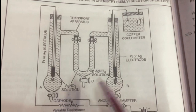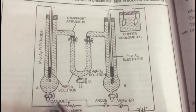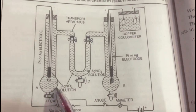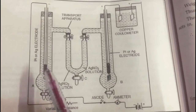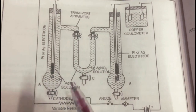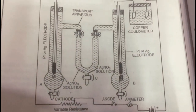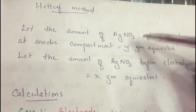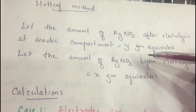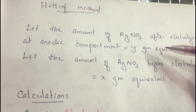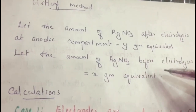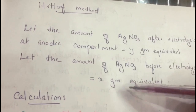The ions present are Ag+ and NO3−. When electricity is passed, Ag+ moves from the anodic compartment to the cathodic compartment and is deposited as Ag. We will discuss two cases: one using a platinum electrode and the other using a silver electrode, to understand the difference when the electrode is attacked versus when it is not. Let the amount of silver nitrate after electrolysis in the anodic compartment equal Y gram equivalents, and before electrolysis equal X gram equivalents.